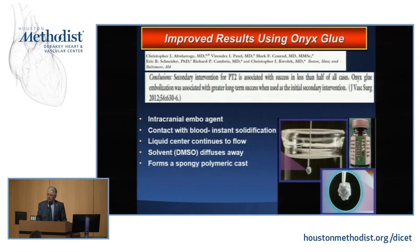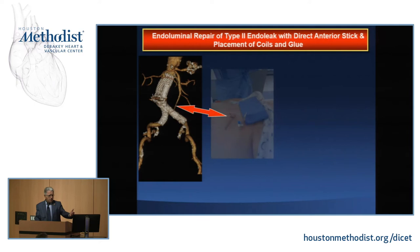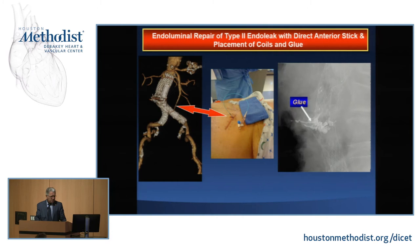One disadvantage of Onyx is cost — we call it black gold. A single vial costs over $3,000 and you typically use two to three vials per case. This procedure can be done via trans-lumbar or anterior approach. You inject Onyx — available in different viscosities, 18 and 32 — fill the cavity, perform the angiogram, and if you don't see endoleak, you are done. The anterior approach cannot be used when bowel is in the way.